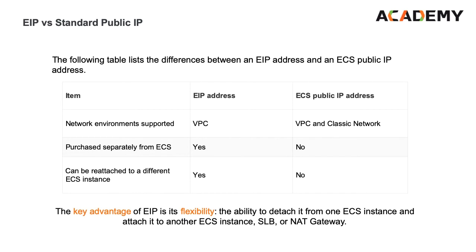The following table lists the differences between an EIP address and an ECS public IP address. ECS public IP address is supported in both classic network and VPC, while EIP is only supported in VPC network. ECS public IP must be purchased together with ECS, while EIP can be purchased separately. You can bind and release EIP from ECS at any time, while this is not supported with an ECS public IP address. The key advantage of EIP is the flexibility — the ability to detach it from one ECS instance and attach it to another.